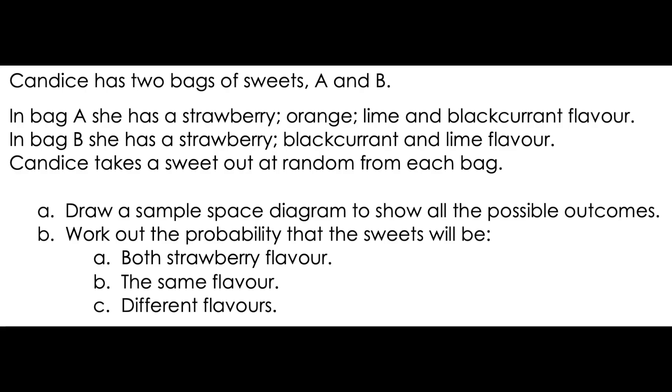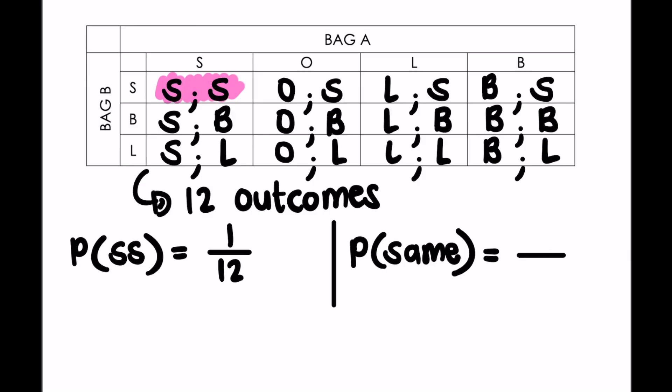The next question: what is the probability that they'll be the same flavor? One bag has 4 flavors and the other has 3, so they can't both be orange since there's no orange in the second bag. They can both be strawberry-strawberry, both lime-lime, or both blackcurrant-blackcurrant. So we have 3 same-flavor outcomes out of 12, and 3 out of 12 simplifies to 1 out of 4.